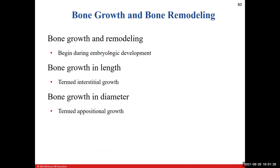Bone growth and remodeling start around the eighth week of development. Remodeling continues until death. Bone length growth — interstitial growth — stops at skeletal maturity around age 25. Bone diameter growth is appositional growth. Bone length is interstitial; bone diameter is appositional.